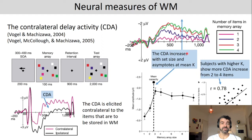What can we do with the CDA component? It is interesting that the CDA increases with the number of items stored in working memory. For one item there's only a small negativity; for two items it's already increasing; for three items there's a relatively large amplitude. For four items, interestingly, there's only a slight increase, if any at all.